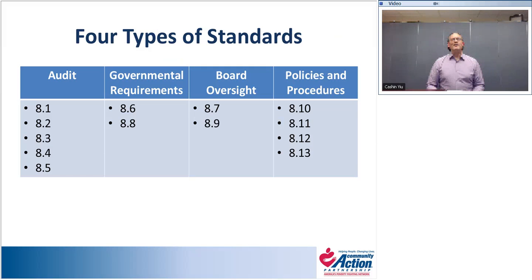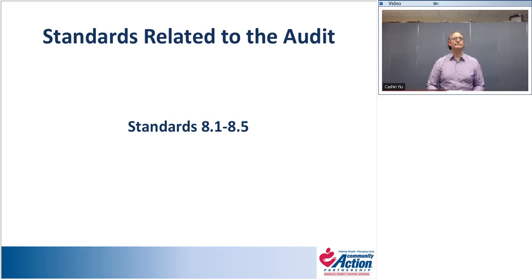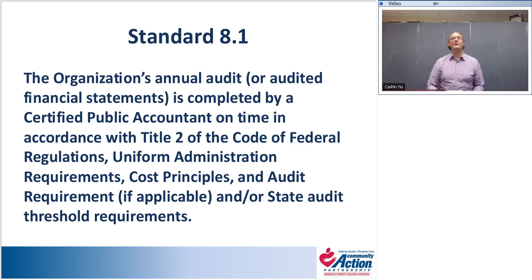We're looking at the standards in four different groups. The first area covers the audit — Standards 8.1 through 8.5. Standards 8.6 and 8.8 address governmental requirements. Standards 8.7 and 8.9 cover board oversight of agency finances. And Standards 8.10 through 8.13 cover policies and procedures. We'll go through each standard one at a time and pause for questions at the end of each section. Kevin will provide additional detail on the more technical questions.